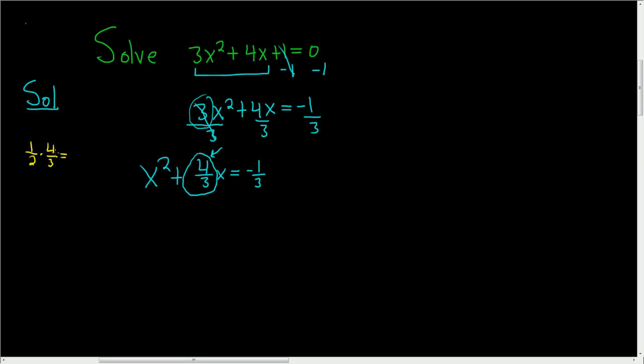When we do that, the 2 goes into the 4 twice, so we end up with 2 thirds. And now we square it. So 2 thirds squared is 4 over 9.